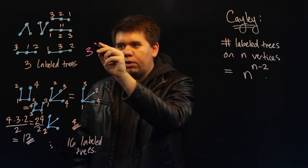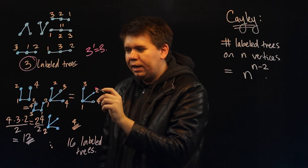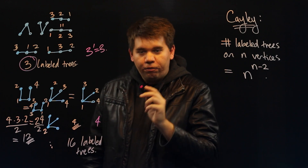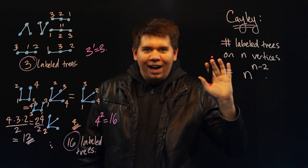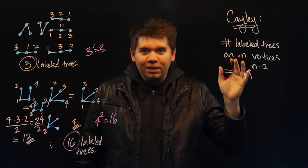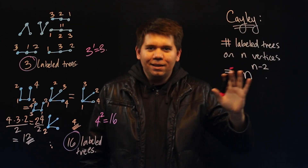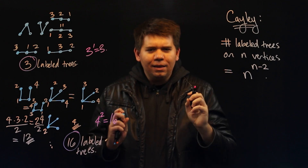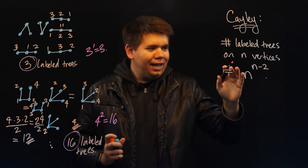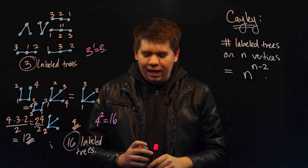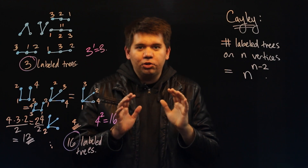So for 3 vertices, take 3^(3−2) = 3^1 = 3, just like we found. For 4 vertices, 4^(4−2) = 4^2 = 16, just like we found. For 5 vertices, 5^(5−2) = 5^3 = 125. Why is this true? It is quite difficult to try and count it directly — how would you show there are exactly n^(n−2) labeled trees on n vertices?